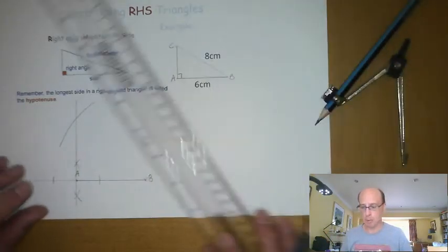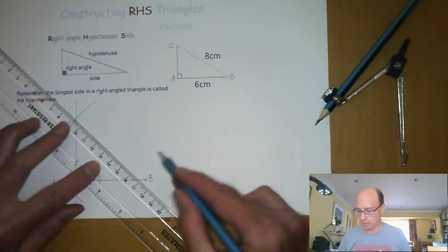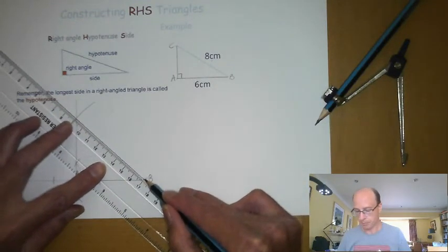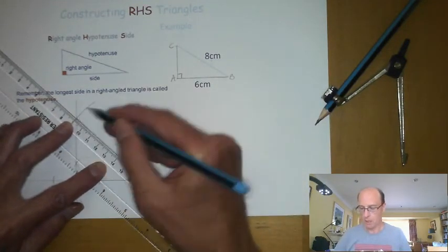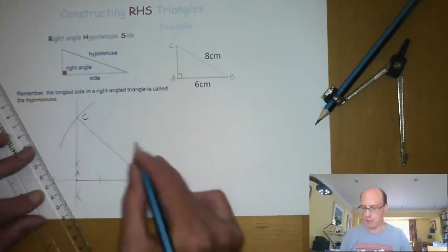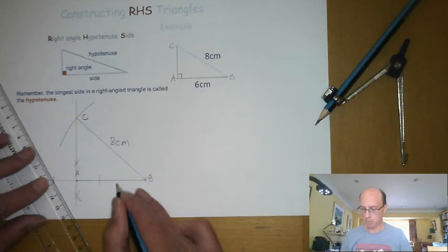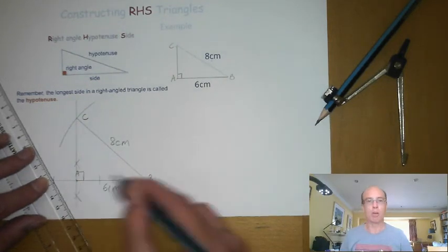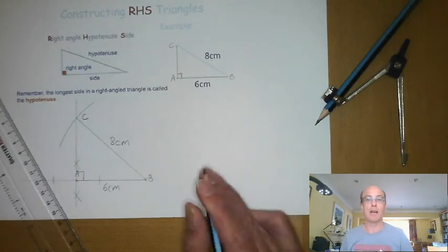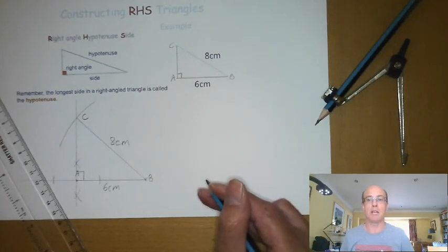I'm now going to connect up the intersecting point with my point B. Mark this at point C. We know that the hypotenuse is eight centimeters long. My base length is six centimeters. I have a right angle in my triangle, and I've successfully drawn my RHS triangle.